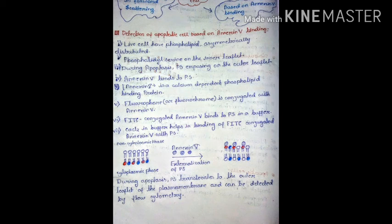Annexin-5 is a protein that binds with a special type of phospholipid. Due to its binding to a specific type of phospholipid, we can differentiate an apoptotic cell from a normal cell. Live cells have phospholipids that are asymmetrically distributed.